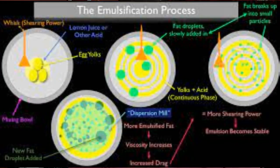Emulsification in the digestive system: emulsification is a process in which large lipid globules are broken down into several small lipid globules. These small globules are widely distributed in the chyme rather than forming large aggregates.